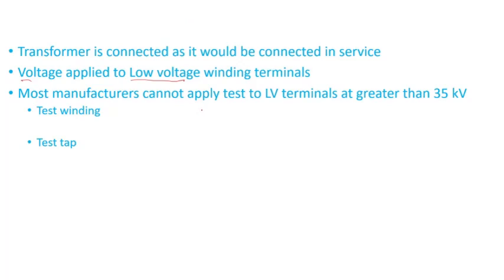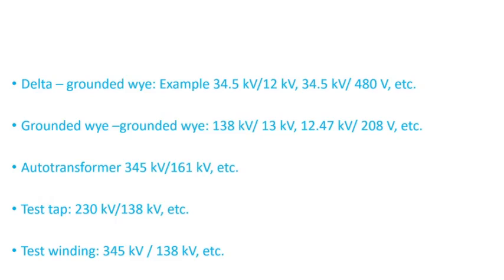Most manufacturers cannot apply the test to the low voltage terminals if they are greater than 35 kV. In that case, some manufacturers might add another winding just for testing purposes, and it will be permanent — it won't be removed after the test. Other manufacturers might put a test tap within the low voltage windings so they can apply the voltage during the induced test.